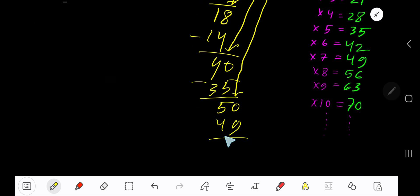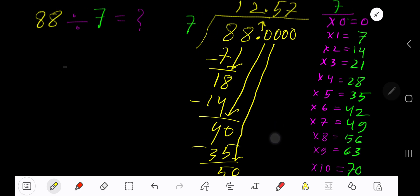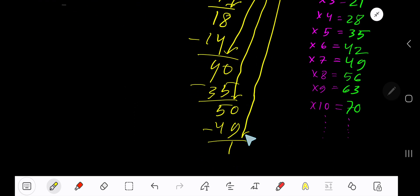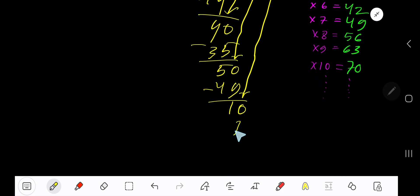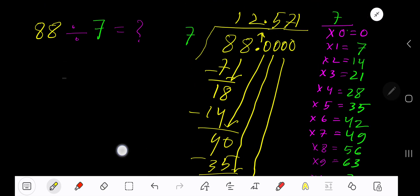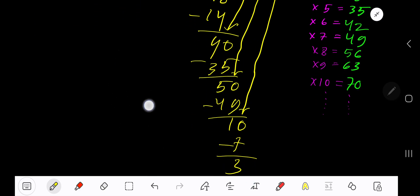Bring down another 0. 7 goes into 10 how many times? 2 times 7 is 14, which is greater, so 1 time. 1 times 7 is 7, subtract to get 3. You can bring down more zeros, but since we have gotten three places after the decimal, we'll stop here.